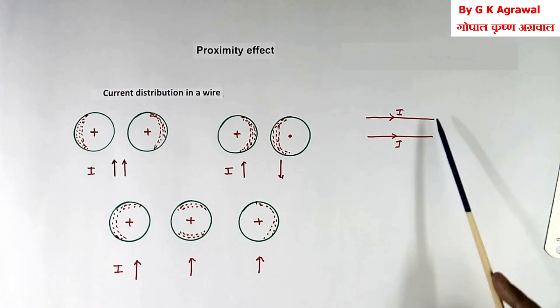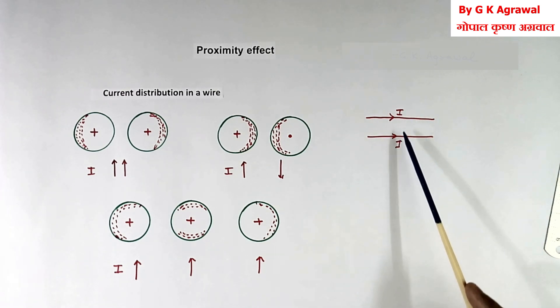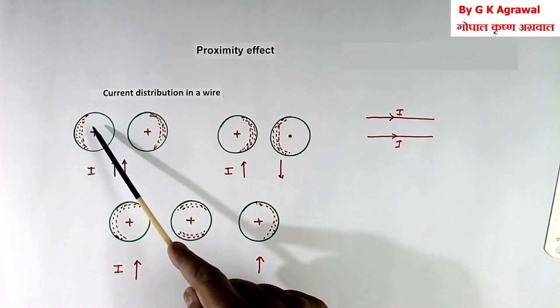Similarly this current will induced EMF in this wire. Because of this induced EMF, eddy current will flow in both the wires. And current will not flow in full area.